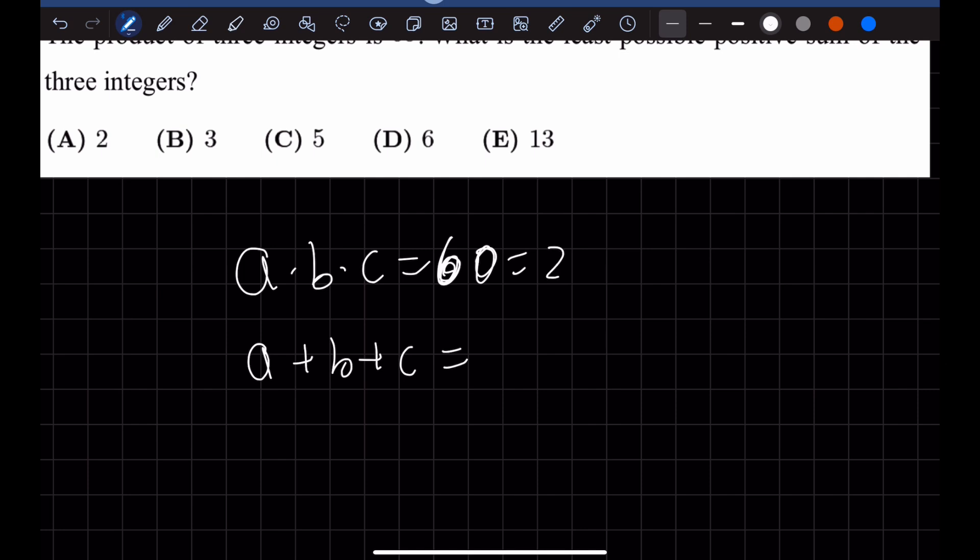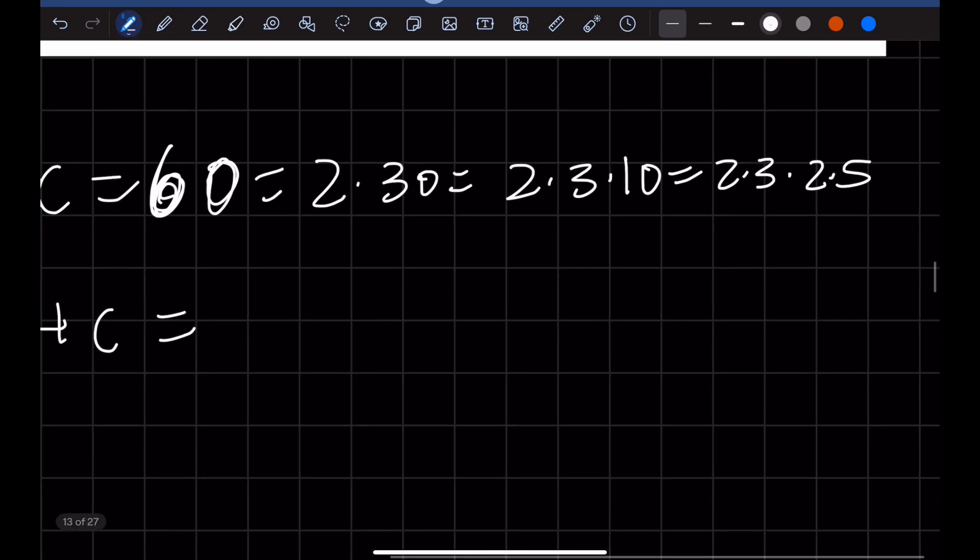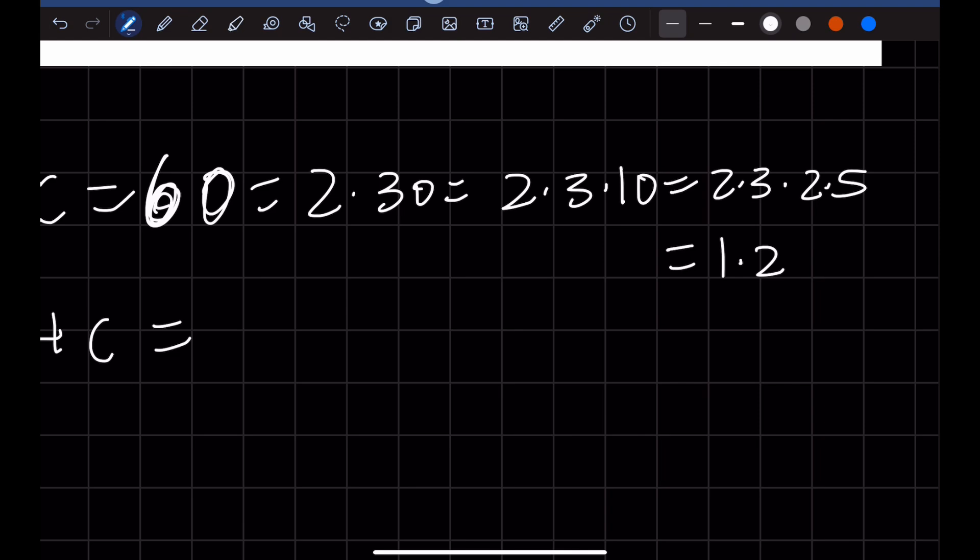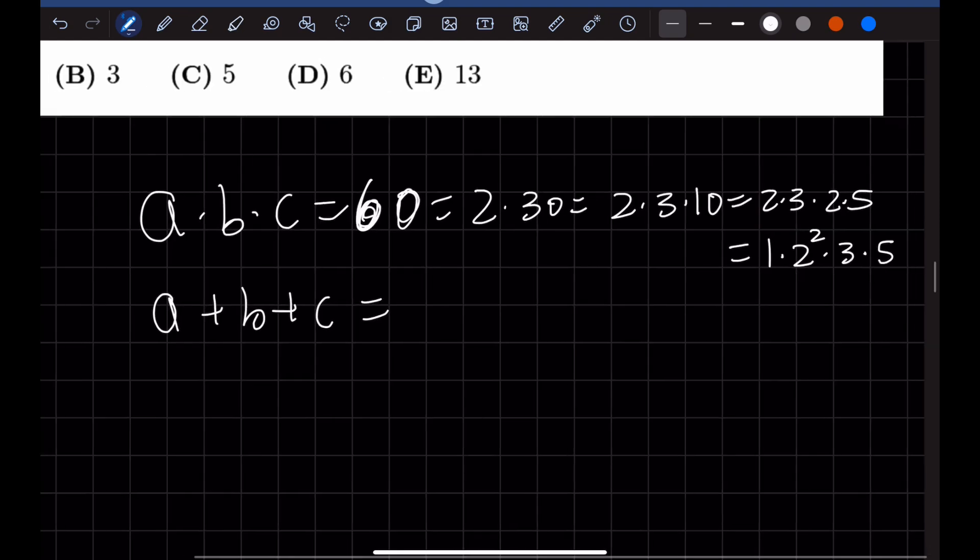So 60 equals 2 times 30 equals 2 times 3 times 10, which is 2 times 3 times 2 times 5. So if you prime factorize this, this would be 2 to the power of 2 times 3 times 5, and this makes up 60.